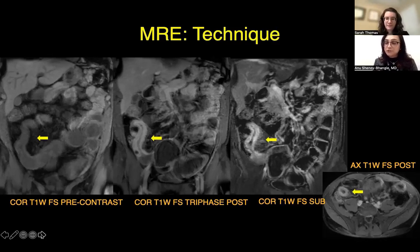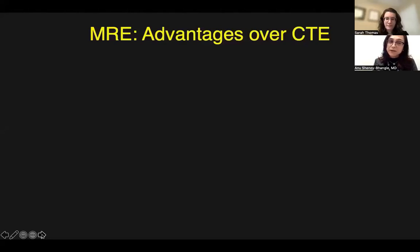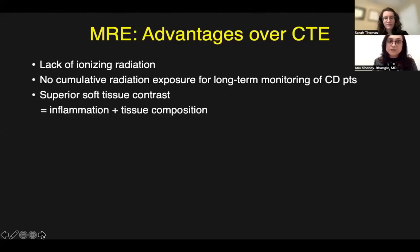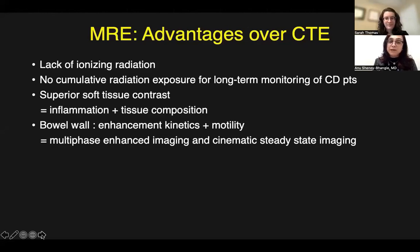Because of concerns regarding potential tissue deposition of intravenous gadolinium contrast material after repeat administration, MR enterography examinations are increasingly performed either without IV contrast material or with the macrocyclic contrast agent during follow-up in patients with established disease. Some advantages of MRE over CTE include lack of ionizing radiation, therefore no cumulative radiation exposure for long-term monitoring of patients with chronic disease. MRE also provides superior soft tissue contrast, thereby enabling better assessment of inflammation as well as tissue composition. Bowel wall enhancement kinetics and motility can be assessed by this imaging modality.